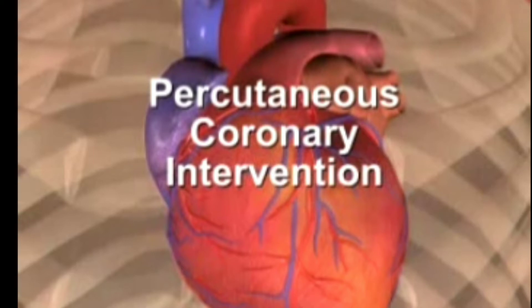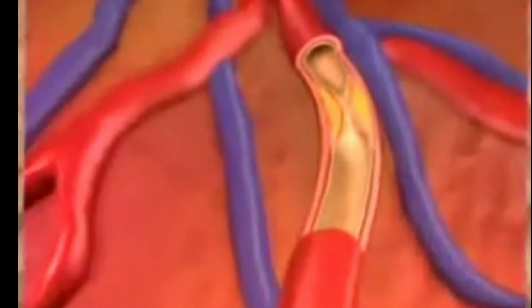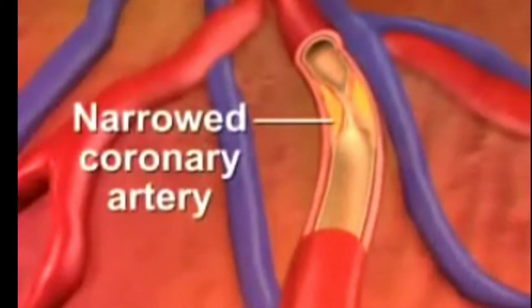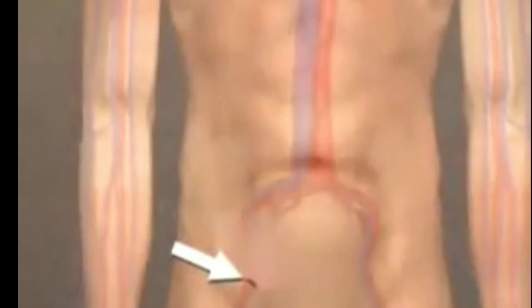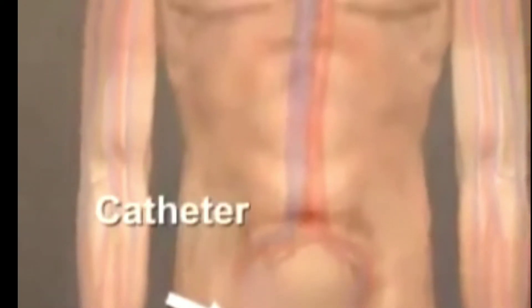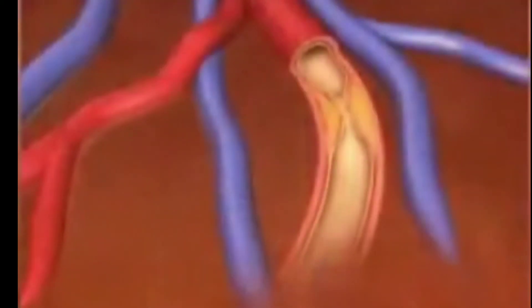Percutaneous coronary intervention, also known as coronary angioplasty, opens narrowed coronary arteries. A small hollow tube called a catheter is inserted into an artery in the groin or arm and threaded to the affected artery.